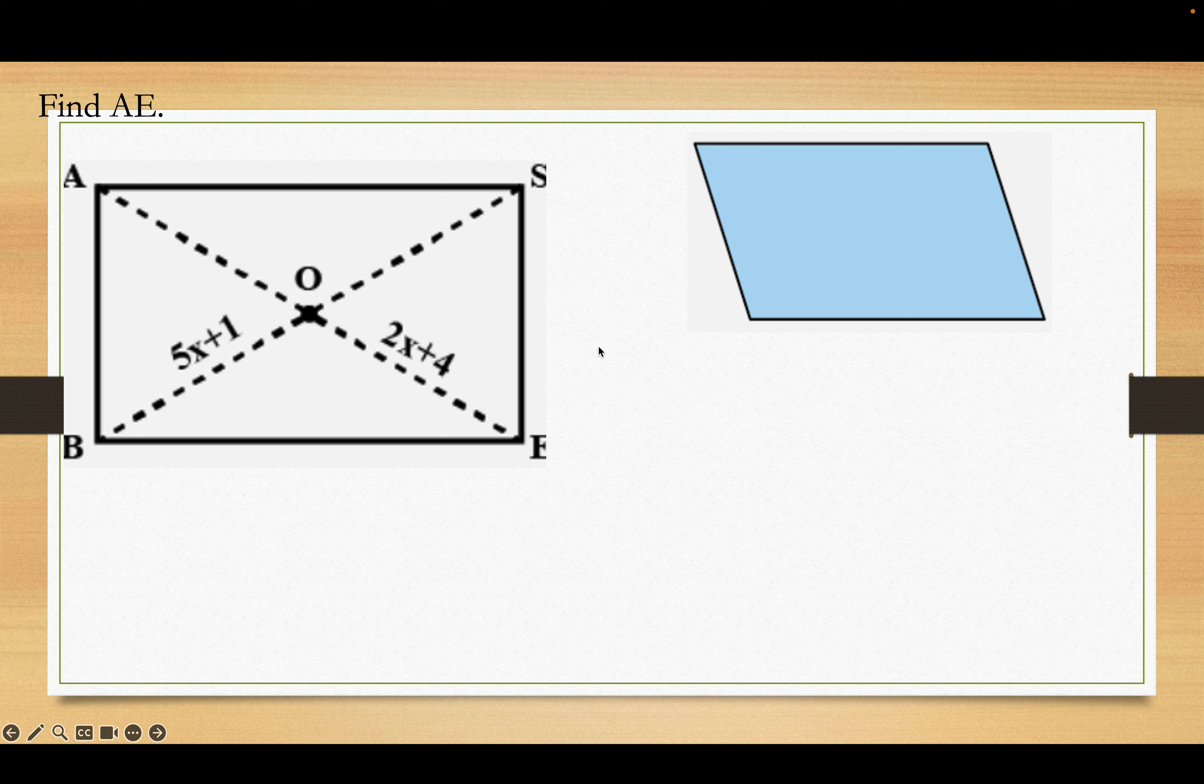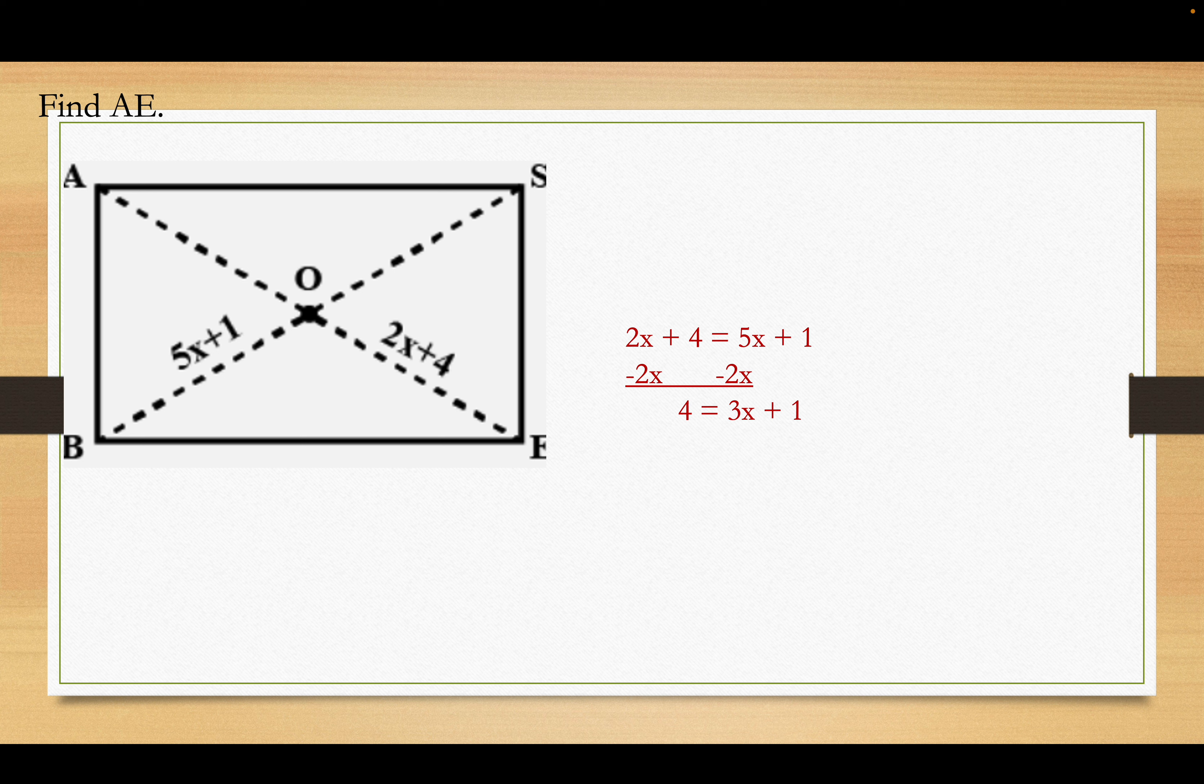Okay. This is just, it's a rectangle. But because of that, remember, those diagonals are congruent, and they're both being bisected. Okay. So, 2x plus 4 has to equal 5x plus 1. Okay. Letters on one side, numbers on the other. Here, x works out to be 1. Okay.